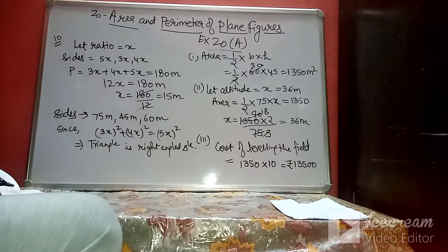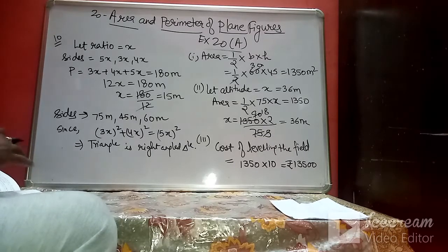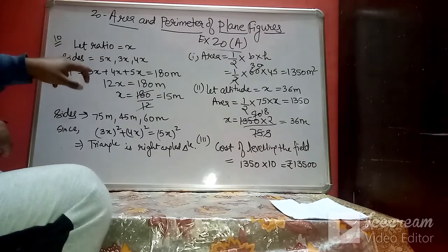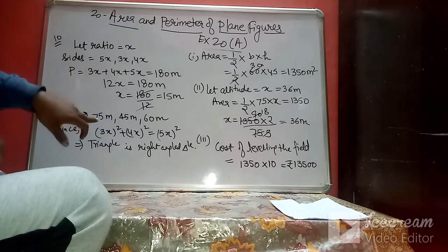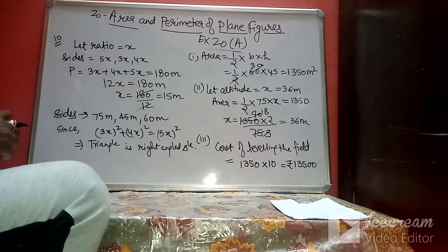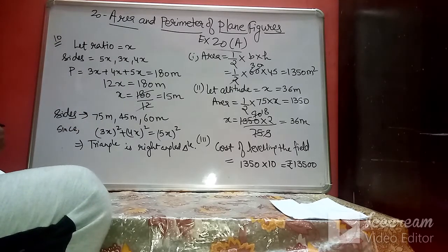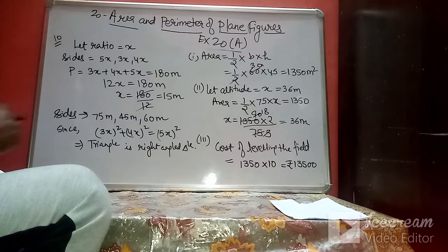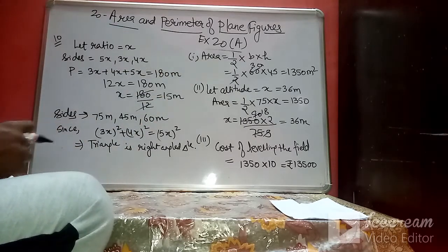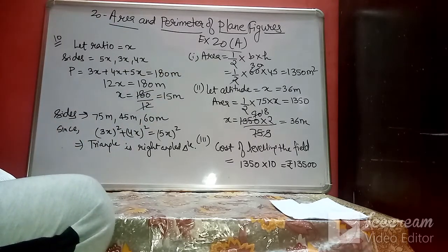One key takeaway from this question: if the ratio of sides is given, inspect whether the triangle is a right-angled triangle. If it is, there is no need to use Heron's formula — you can simply use area = ½ × base × height.